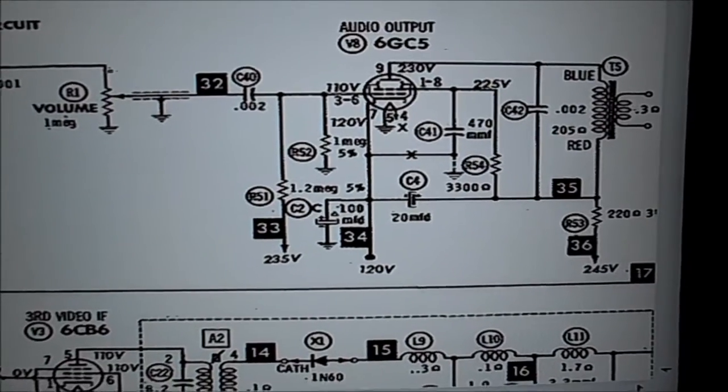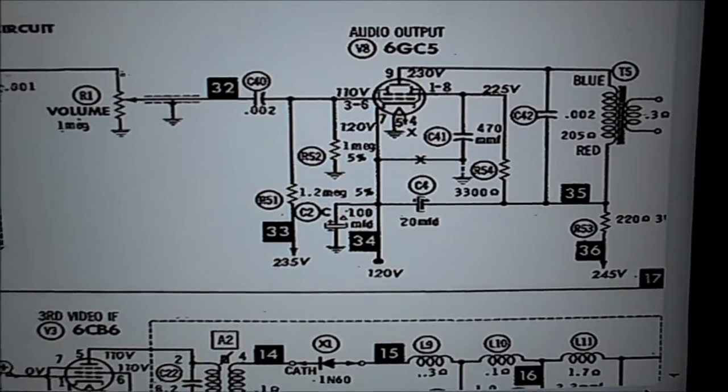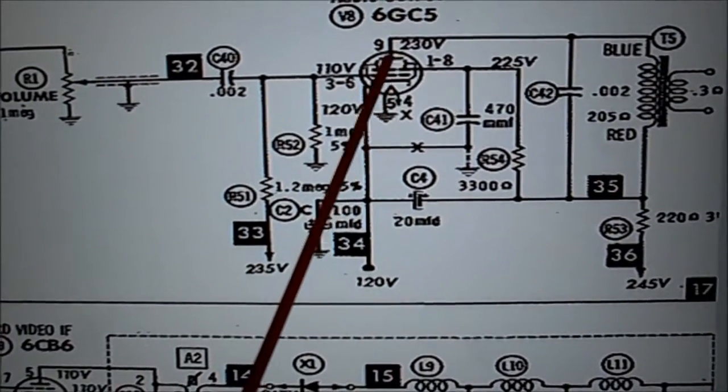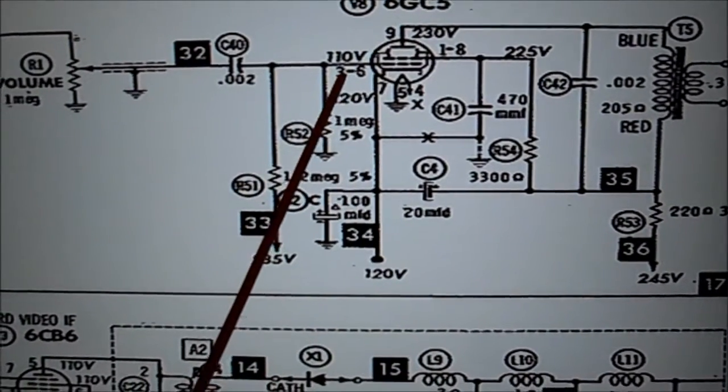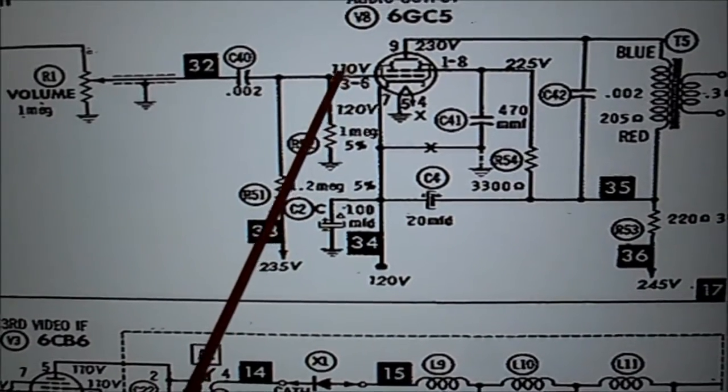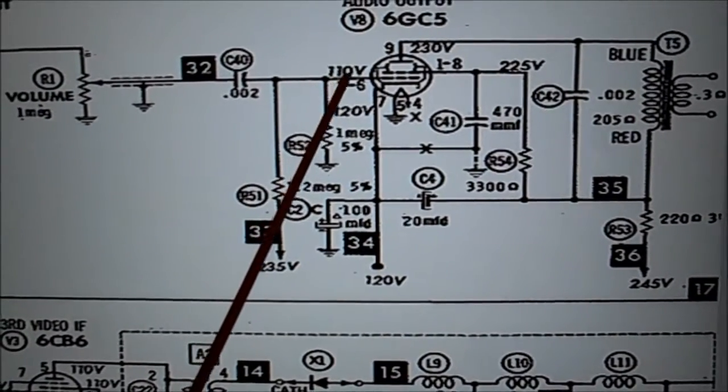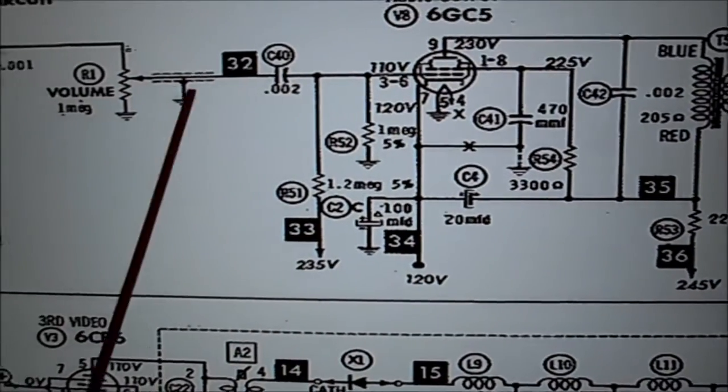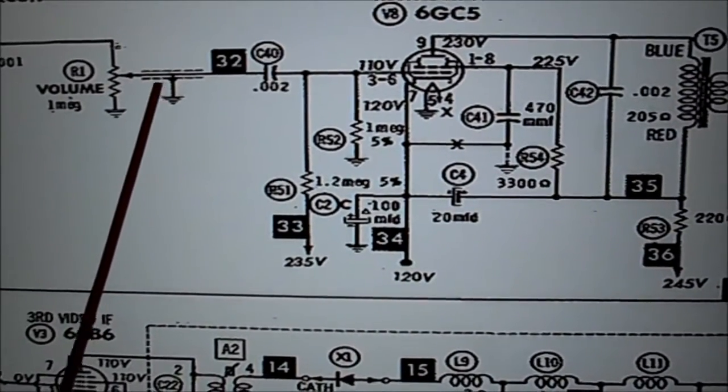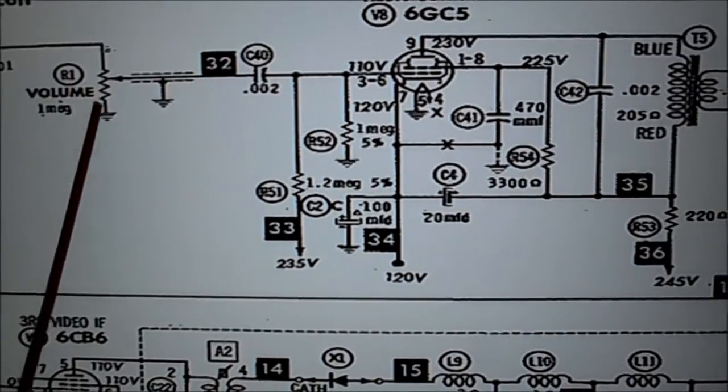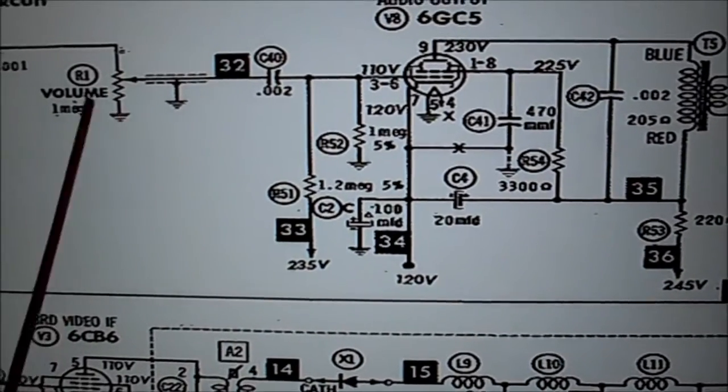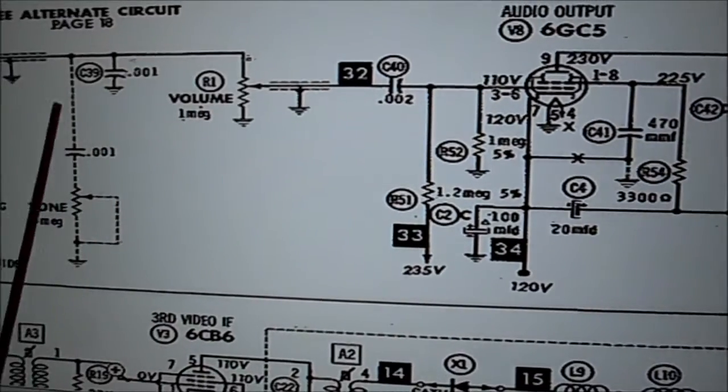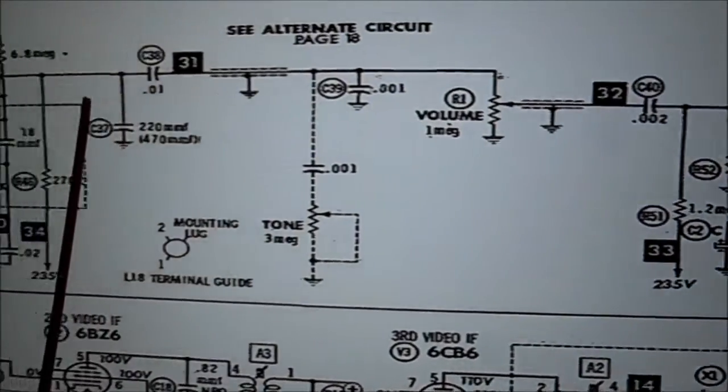I also hear a slight hum in the speaker. So as I said, I went around and I took the voltages here. I have my plate voltage, and I have my 110 volts right here on pin 3, which is the input. This comes from the volume control. The volume control is tucked way in the front of the set, so it's really hard to get to.